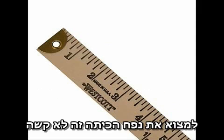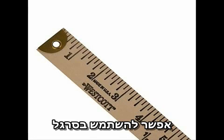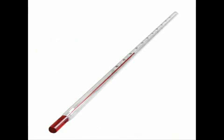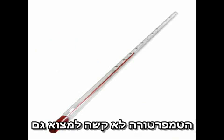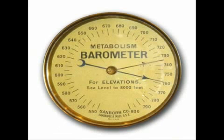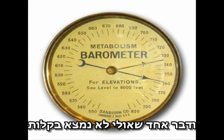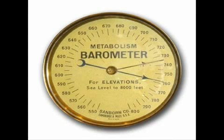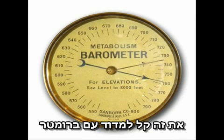To find the volume of your classroom is not very hard — you can simply use a ruler. The temperature isn't all that hard either, since all you need for that is a thermometer. The one thing you may not automatically know how to get would be the pressure of your classroom, but this can easily be found using an instrument like a barometer.